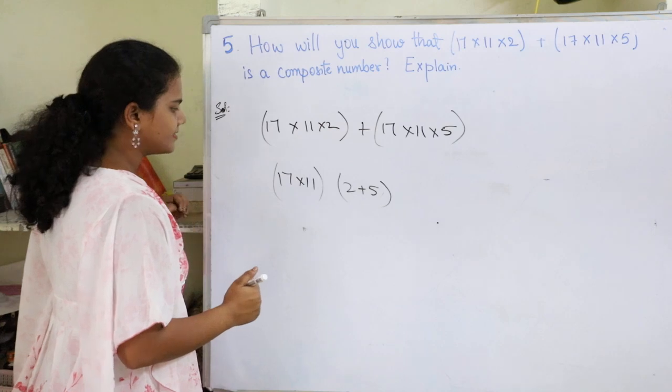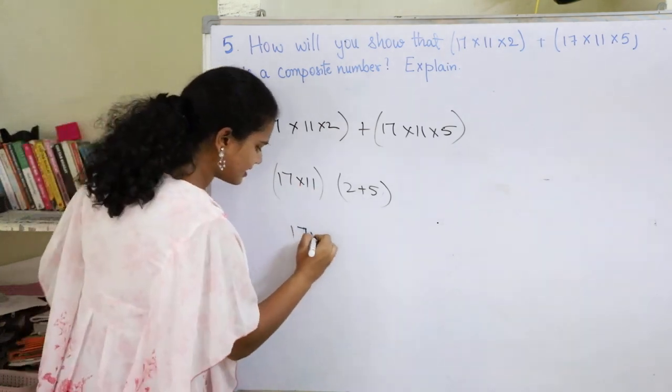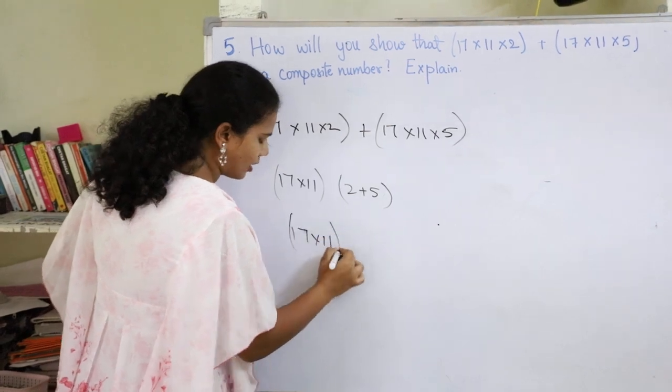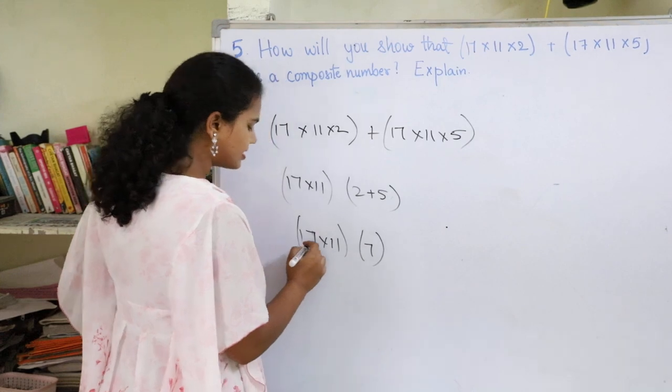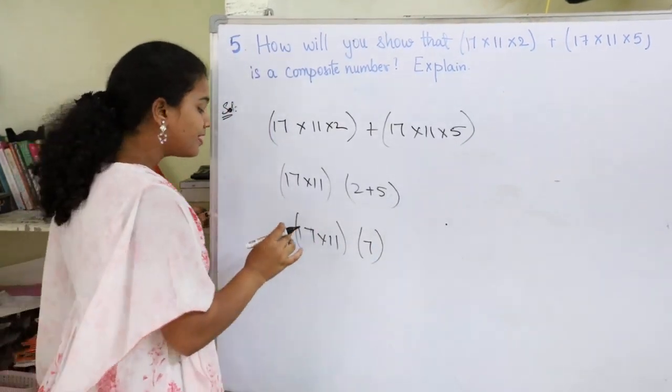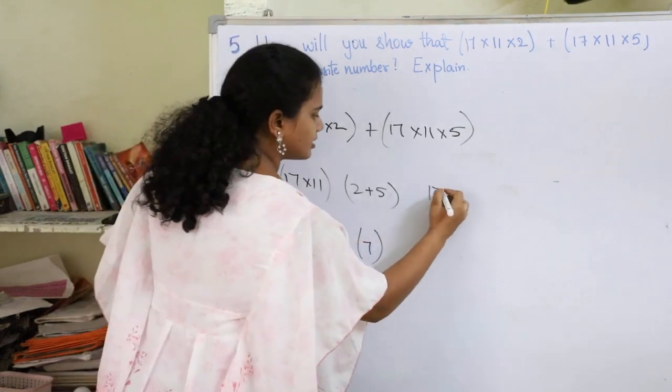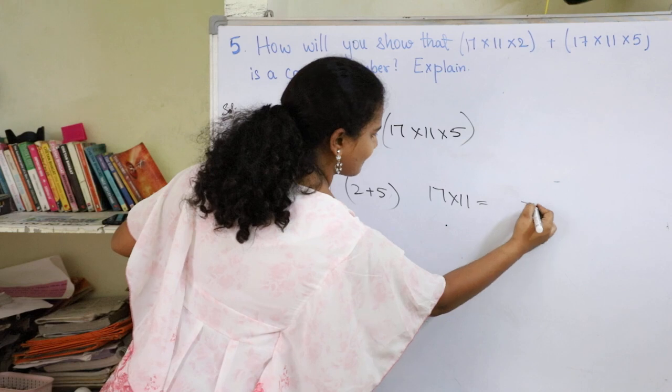Now here let 17 into 11 be as it is. 2 plus 5 gives 7, so we have 17 into 11 into 7.